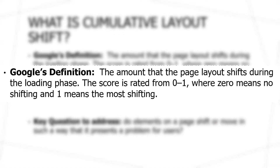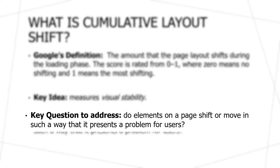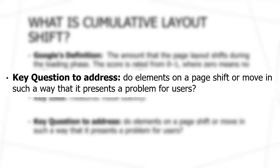Cumulative layout shift is the amount that the page layout shifts or moves during the loading of the website. This is a score rated from zero to one, where zero means there's no shifting at all happening, and one means that almost everything is moving around the page. The key idea within cumulative layout shift is that we're trying to measure visual stability — specifically whether elements on a page shift or move in a way that presents a problem for users.